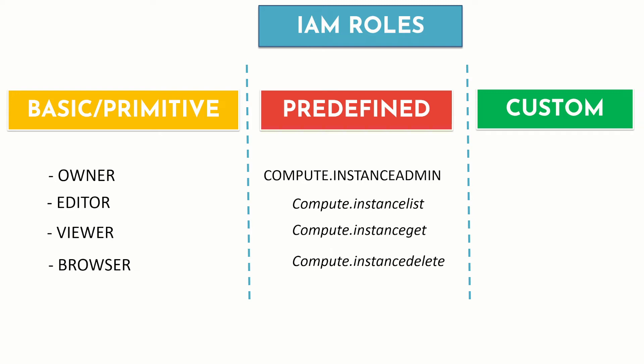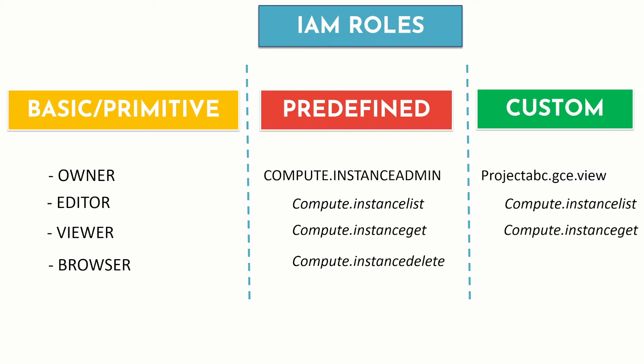If you need something even finer-grained, you use custom roles. These roles are created to tailor permissions to the needs of an organization when predefined roles do not meet the requirements. For example, if you want to grant only instance list and get permissions to a specific set of users, you create a custom role and add just those two permissions. Note that custom roles cannot be applied at the folder level.